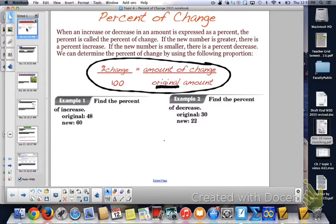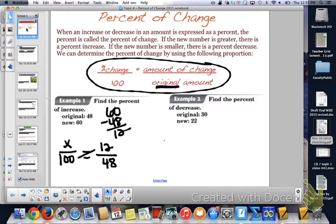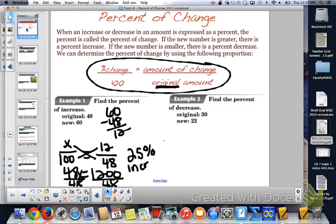For example 1, finding the percent of change between 48 and 60. The amount of change, 60 minus 48, equals 12. The original is 48, and we're looking for the percent, so it's x over 100. When you're doing this, we cross-multiply: 48x equals 12 times 100, which is 1200. Then we divide by 48. 1200 divided by 48 is 25, so there's a 25% increase because the original went up.